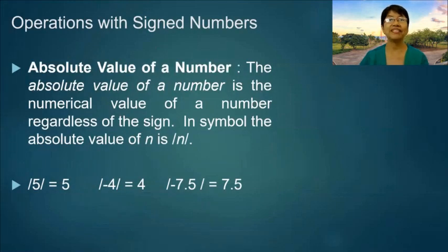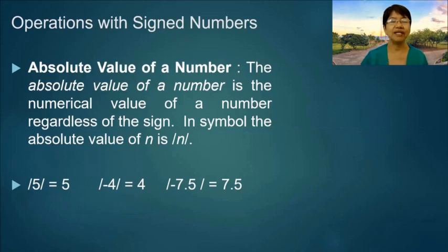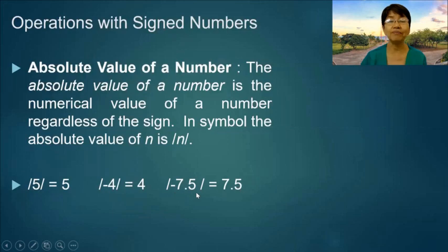Operations with Signed Numbers: Absolute value of a number. The absolute value of a number is the numerical value of a number regardless of the sign. In symbol, the absolute value of n is written as |n|. The absolute value of 5 is positive 5. The absolute value of negative 4 is positive 4. The absolute value of negative 7.5 is 7.5.